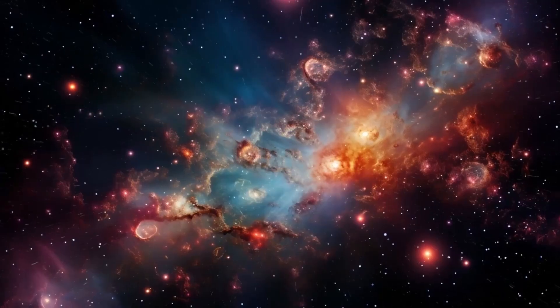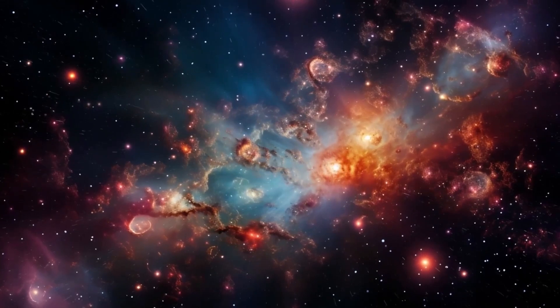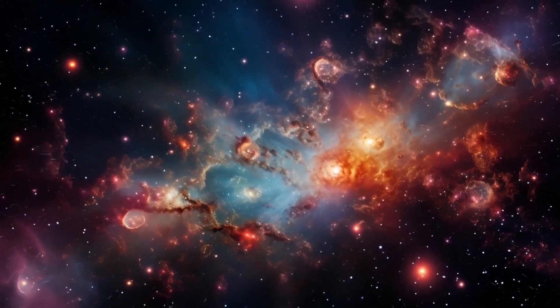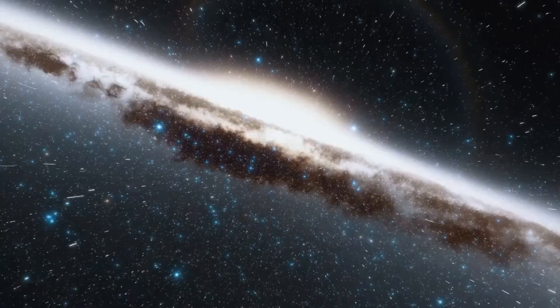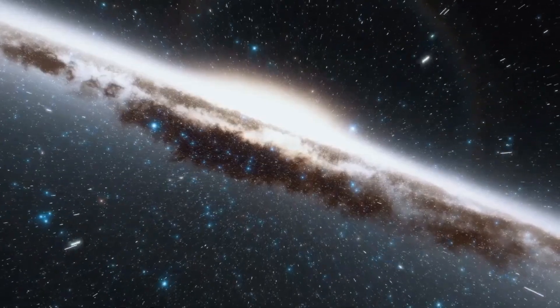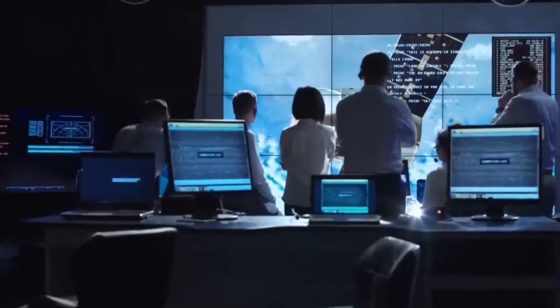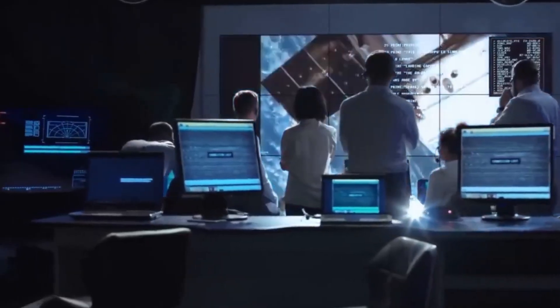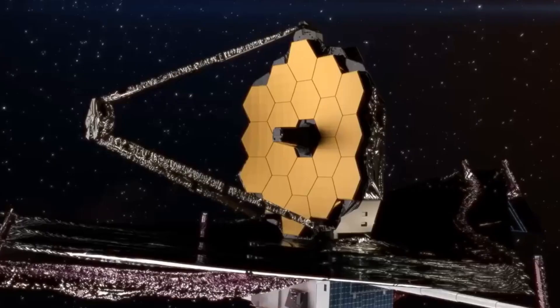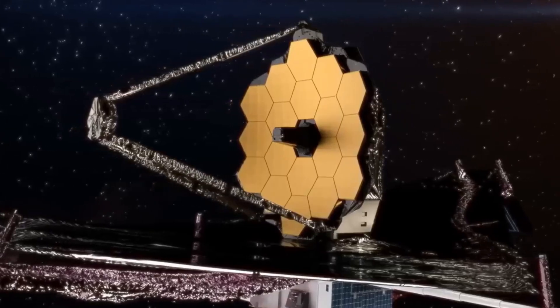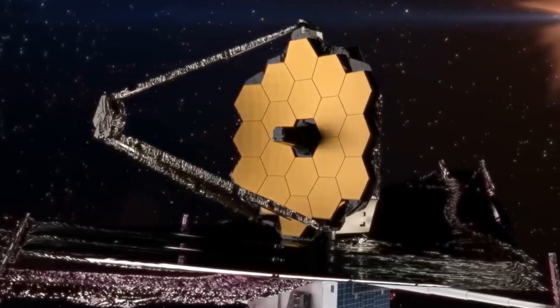The JWST also required a sun shield to block heat and light from the Sun, Earth, and Moon, keeping the telescope's instruments at their operating temperature of just a few degrees above absolute zero. The sun shield, the size of a tennis court, is made of five layers of a special material called Kapton, which can withstand extreme temperatures.